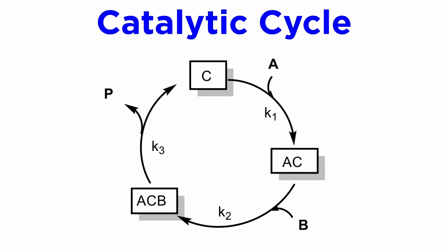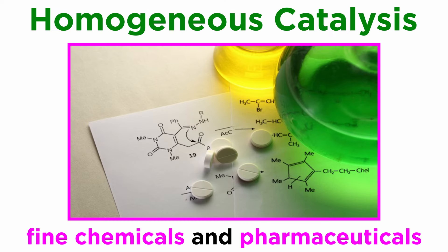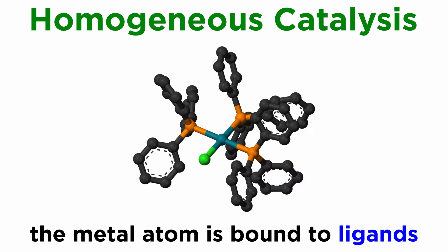Most catalytic cycles are more complex than this, but this basic framework gives you an idea of how we will represent the reactions we will be discussing in this series. Homogeneous catalysis is widely practiced in the synthesis of complex molecules, like fine chemicals and pharmaceuticals. The catalyst M is usually bound to a number of ligands, and these ligands can be optimized to tailor specific reactivities of interest.